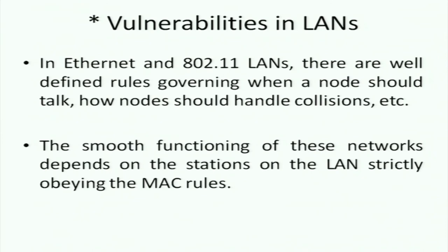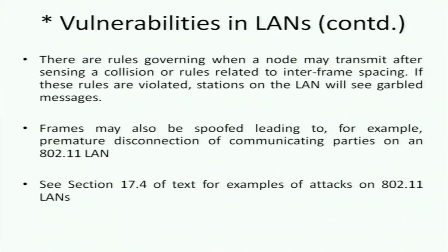The smooth functioning of these networks depends on stations strictly obeying the MAC rules. There are many tools that can hack into things like wireless LANs. There are rules governing when any node may transmit after sensing a collision, and in the wireless LAN case, rules related to inter-frame spacing. If these rules are violated, stations will see garbled messages and almost nobody will be able to talk. Frames may also be spoofed — for example, sending a de-authentication or de-association frame on an 802.11 LAN causes A to think B doesn't want to continue talking and stops communication.